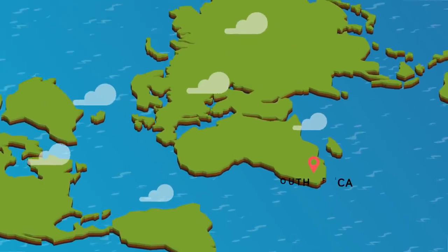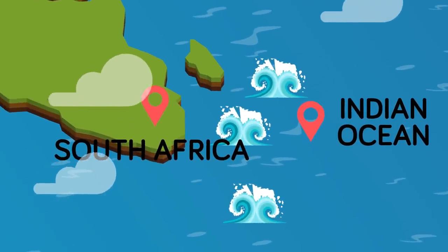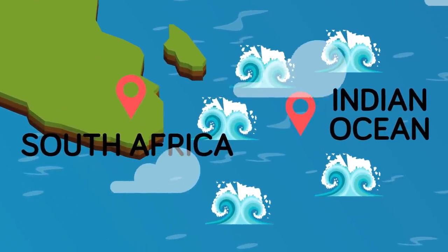The data indicated that rogue waves may be especially common in areas of strong ocean currents, such as the Agulhas current in the Indian Ocean off of South Africa.